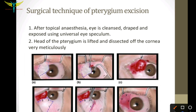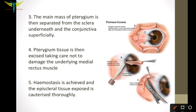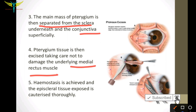The surgical technique: after applying topical anesthesia, the eye is cleansed, draped, and exposed using a universal eye speculum. The head of the pterygium is lifted and dissected off the cornea very meticulously. The main mass of pterygium is then separated from the sclera underneath and the conjunctiva superficially. The pterygium tissue is then excised, taking care not to damage the underlying medial rectus muscle, and hemostasis is achieved by cauterizing the exposed episcleral tissue thoroughly.